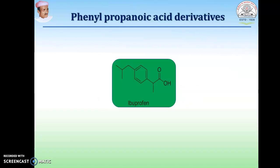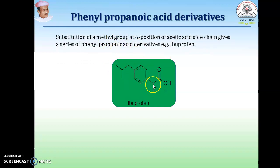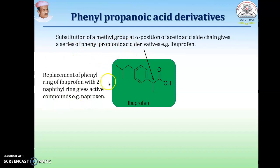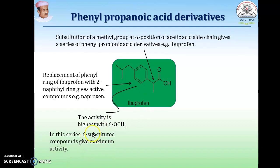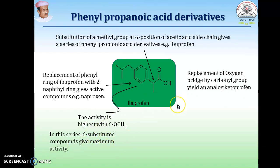Another series of NSAIDs is phenyl propionic acid. Ibuprofen is the major analog of this class. Substitution of a methyl group at the alpha position of the acetic acid side chain gives a series of phenylpropionic acid derivatives. Replacement of the phenyl ring of ibuprofen with two naphthalene rings gives an active compound — example: naproxen. The activity is highest when a methoxy group is present at the 6-position; the methoxy group gives the maximum active compound.